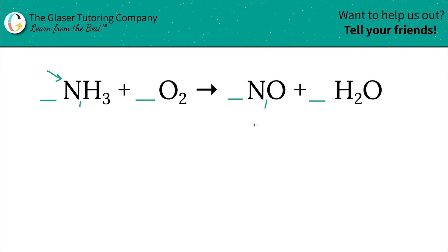So let's balance nitrogen. You have one nitrogen on the left and one nitrogen on the right. That's where subscripts come into play — if you don't see a subscript, it's assumed to be one. So they're already balanced: one balances one.